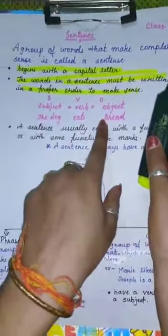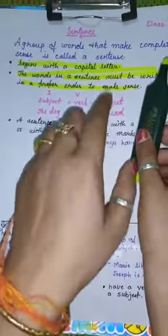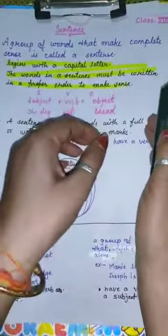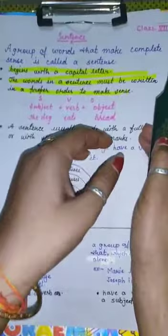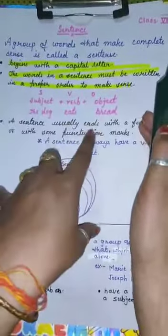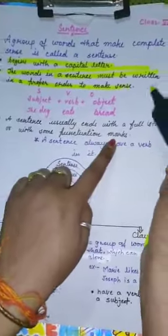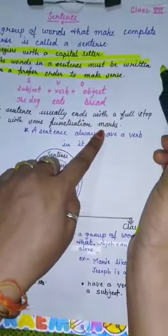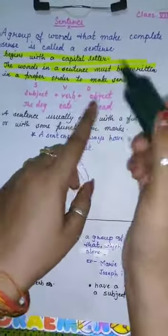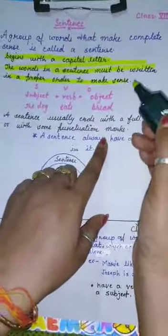So this is the proper order or proper placing of words to construct a meaningful or senseful sentence. A sentence usually ends with a full stop. Sometimes it can end with some other punctuation mark, what we discuss later.